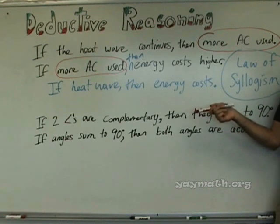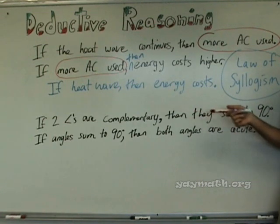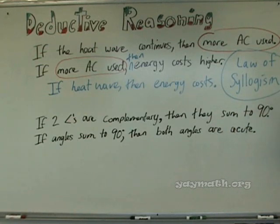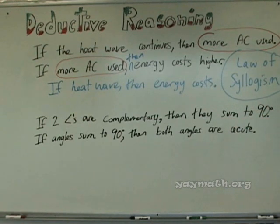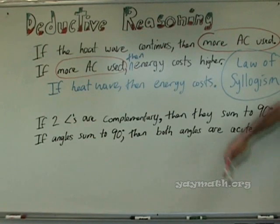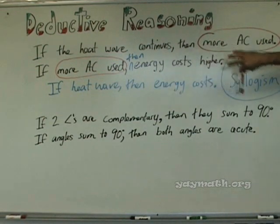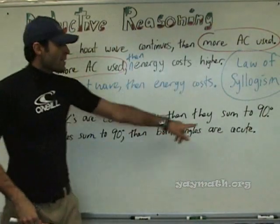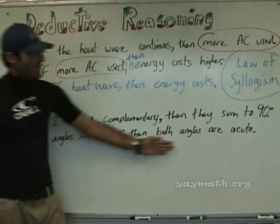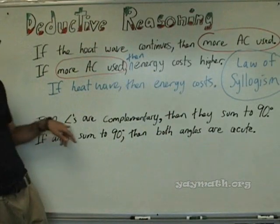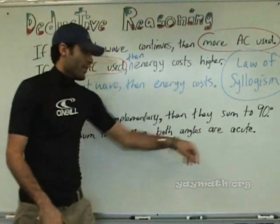If two angles are complementary, then they sum to 90. If angles sum to 90, then both angles are acute. So by the law of syllogism: if two angles are complementary, then they are acute. Sum to 90 is already established — the new statement would be if two angles are complementary, then they are acute.